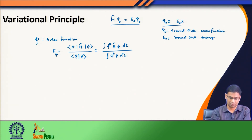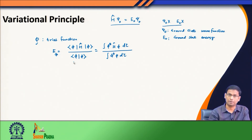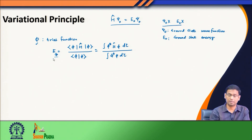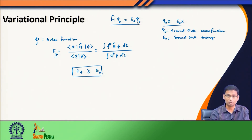Let us look at this term. For a given trial function I can always obtain the corresponding energy. Remember, this is doable even when the Hamiltonian has two-electron terms — evaluating this integral we can use advanced mathematical techniques or even computational methods using computers to evaluate these integrals. Therefore for a given φ we can compute a value of E_φ. But then what?